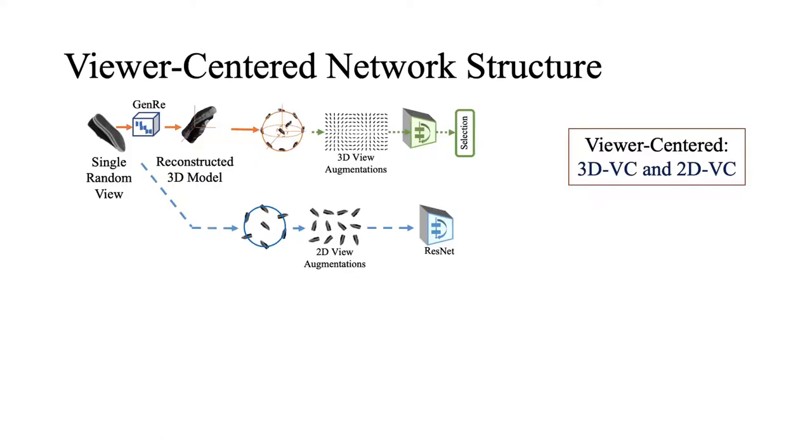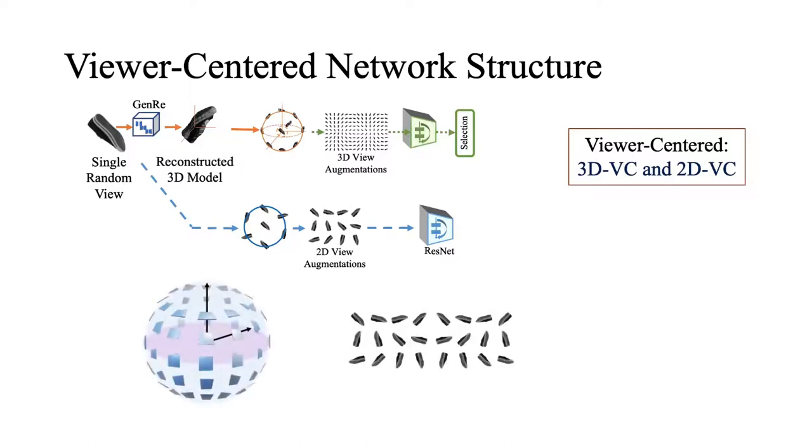The rest of the network structure provides 3D and 2D view-variant features through both 3D and 2D augmentations. The top branch shown here also takes the GenRe output, but instead of using a 3D reconstruction as input, we took multi-views of that reconstruction, then sent it to a network. The bottom branch is our standard ResNet with 2D view augmentation.